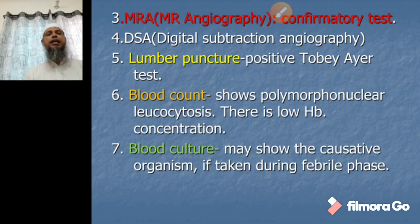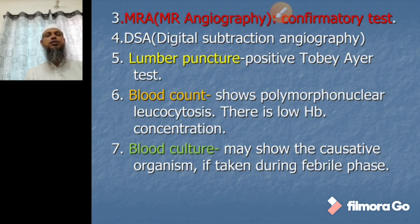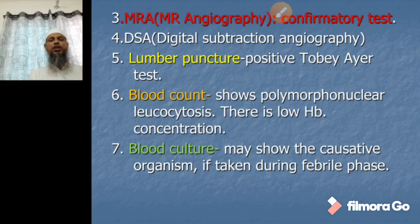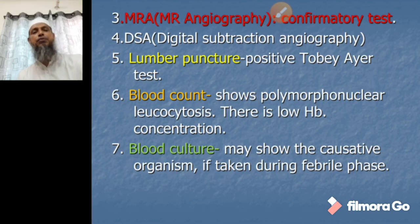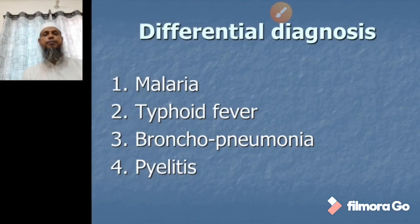MRA (magnetic resonance angiography) is the confirmatory test. Digital subtraction angiography (DSA) is another test. By lumbar puncture, we perform the Tobey-Ayer test. Blood count shows polymorphonuclear leukocytosis and low hemoglobin concentration. Blood culture may show a positive organism if taken during the febrile phase.